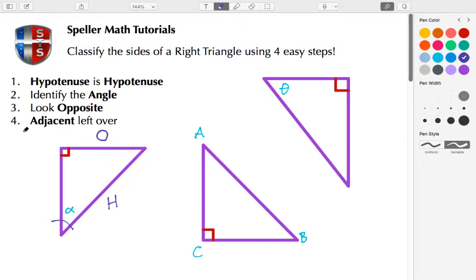And the last step, step number four, is the adjacent is left over. So here we're going to place an A.